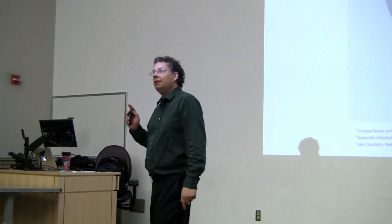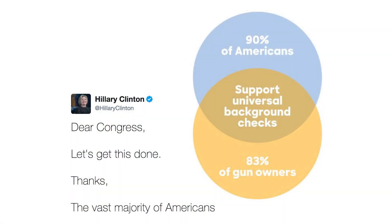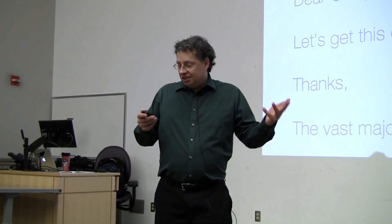I don't want you to think I'm only picking on the right. Hillary tweeted this out earlier last year, trying to make the point that most Americans support background checks. She puts out a nice Venn diagram and says: here's 90% of Americans, here's 83% of gun owners, and then somehow their intersection supports universal background checks — which makes no sense. I'd also like to know if the majority of those 83% of gun owners aren't Americans, because they're not inside that circle. Another duck, another disaster.